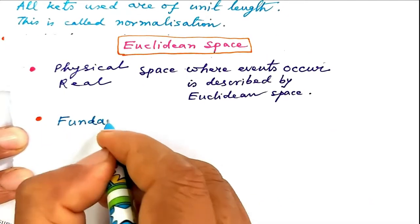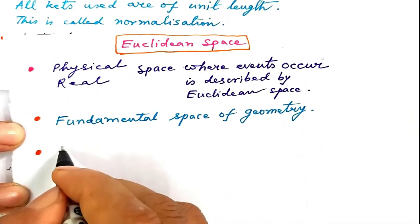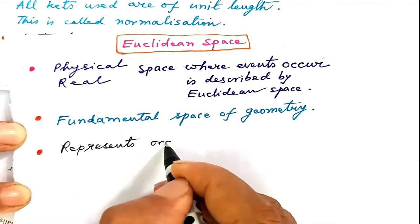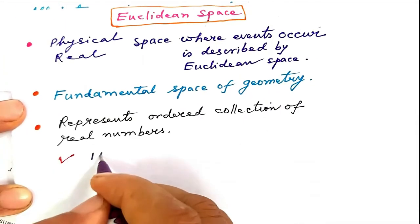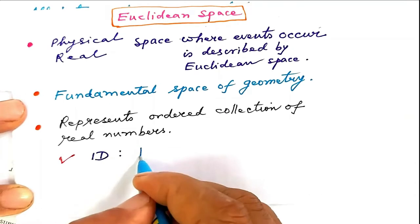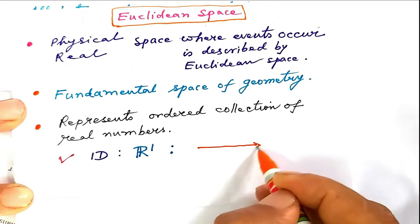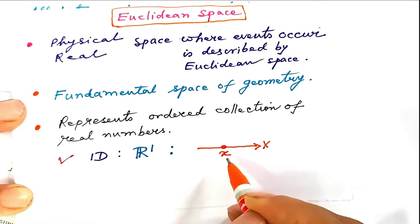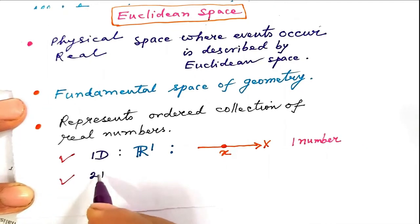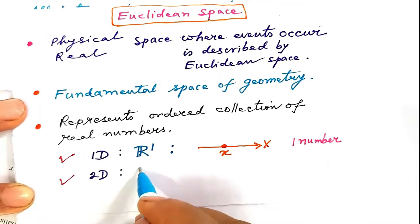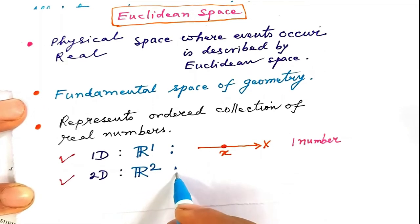Euclidean space is a fundamental space of geometry. It represents an ordered collection of real numbers. A one-dimensional space, or line, is denoted by R superscript 1 (R1). To denote or specify a point in R1, we need one number. A two-dimensional space, or plane, is denoted by R superscript 2 (R2).